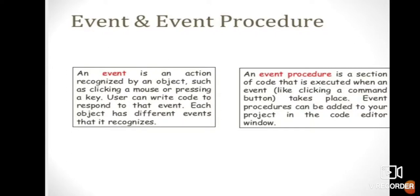An Event is an action recognized by an object, such as clicking a mouse or pressing a key. Users can write code to respond to that event. Each object has different events that it recognizes. An Event Procedure is a section of code that is executed when an event takes place. Event procedures can be added to an object in the code window.